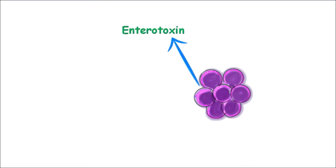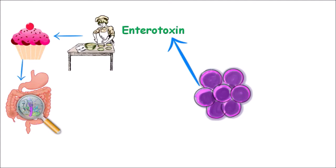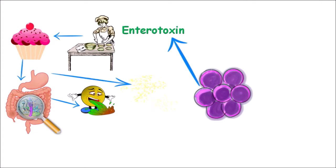Staphylococcus aureus also produces enterotoxin, which is a preformed toxin. It is often spread with the help of food handlers like chefs and waiters, and is most often found in bakery items like potato custards, milk and cakes. This enterotoxin stimulates the vagus nerve and the vomiting center of the brain, and sometimes has direct stimulating peristaltic activity, causing vomiting, diarrhea and nausea, but there is no fever. These symptoms generally resolve within 8 to 10 hours.